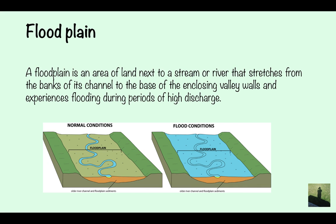So the first feature of the river is a floodplain. A floodplain is an area of land next to a stream or river that stretches from the banks of the channel to the base of the enclosing valley walls, and experiences flooding during periods of high discharge. So if there's lots of rain or a lot of water flowing through the river, then this is the area that's going to be flooded, as you can see here.